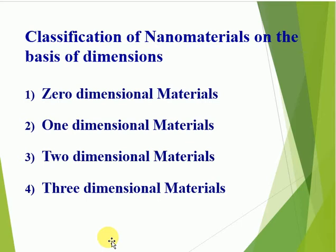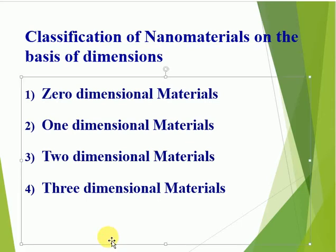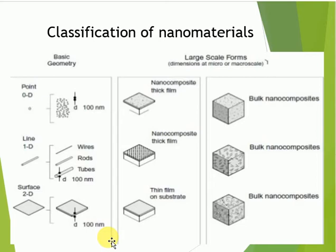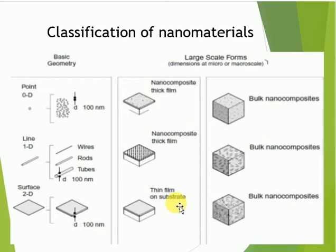Next is the classification of nano materials on the basis of dimension. There are four types: first, zero dimensional material — these are in the form of particles (point); second, one dimensional material — nanowires, nanorods, nanotubes (line); third, two dimensional material — for example, nano films (surface); and fourth, three dimensional materials — bulk nano composites.